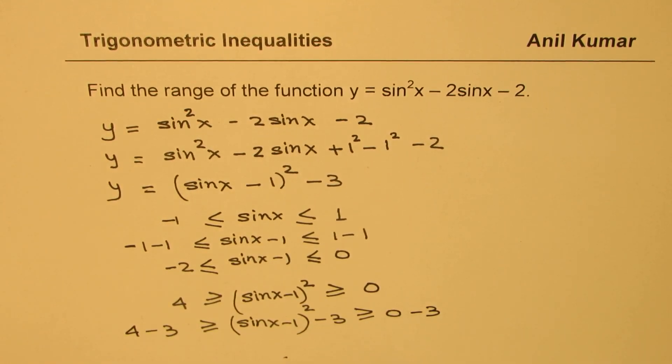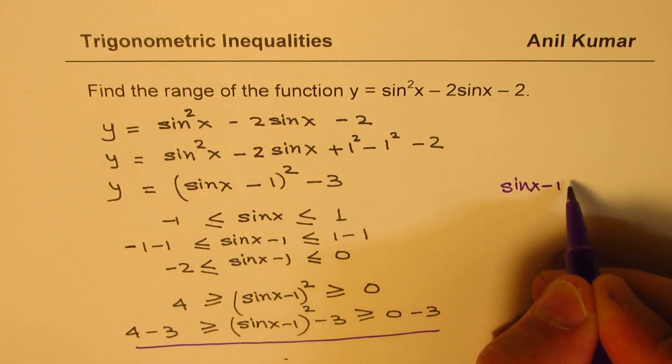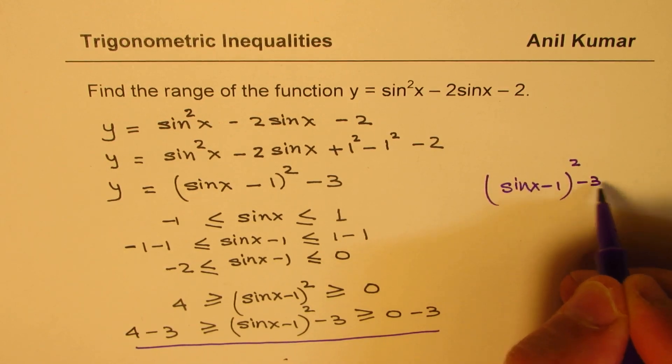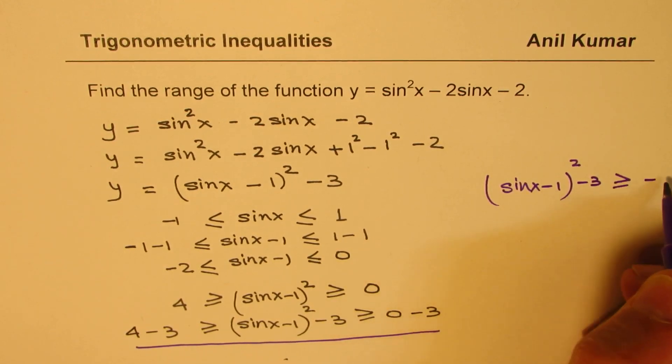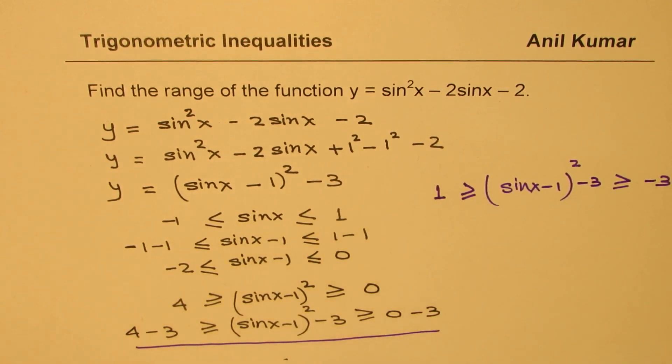So that actually gives you the minimum and the maximum value for the given expression. So from here we can write down our answer which is sine x minus 1 whole square minus 3 should be greater than or equal to minus 3 and should be less than or equal to 1.